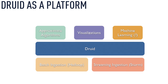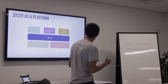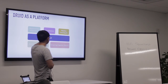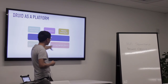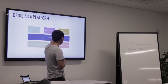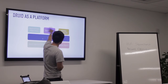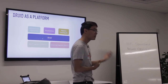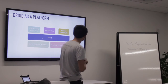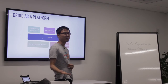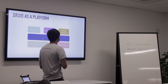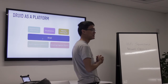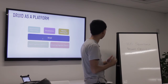Our hope is to turn Druid more into a platform. In production right now, we have batch ingestion done through Hadoop hooking up with Druid, and streaming ETL done with Storm that also hooks into Druid. We have different components built on top of Druid: approximate algorithms like approximate quantiles, approximate histograms, cardinality estimates, and approximate top-Ks. We have visualization components similar to the dashboard you saw earlier. And we have machine learning components — we do robust PCA for trend detection, and we'd love more machine learning contributions to Druid.